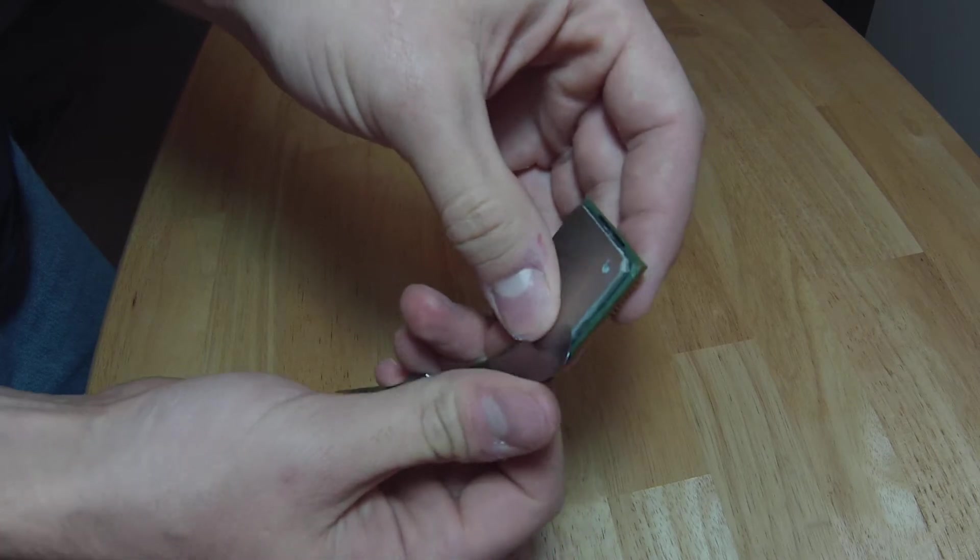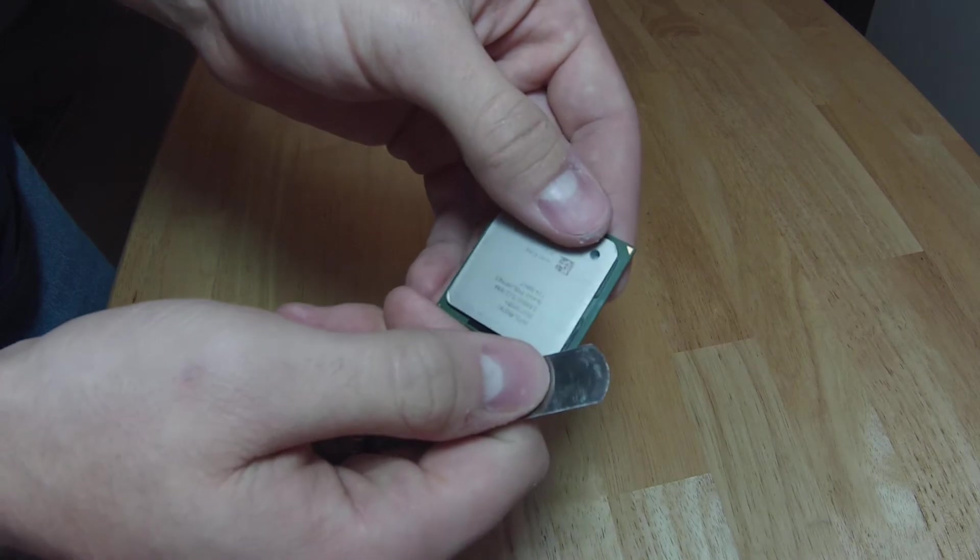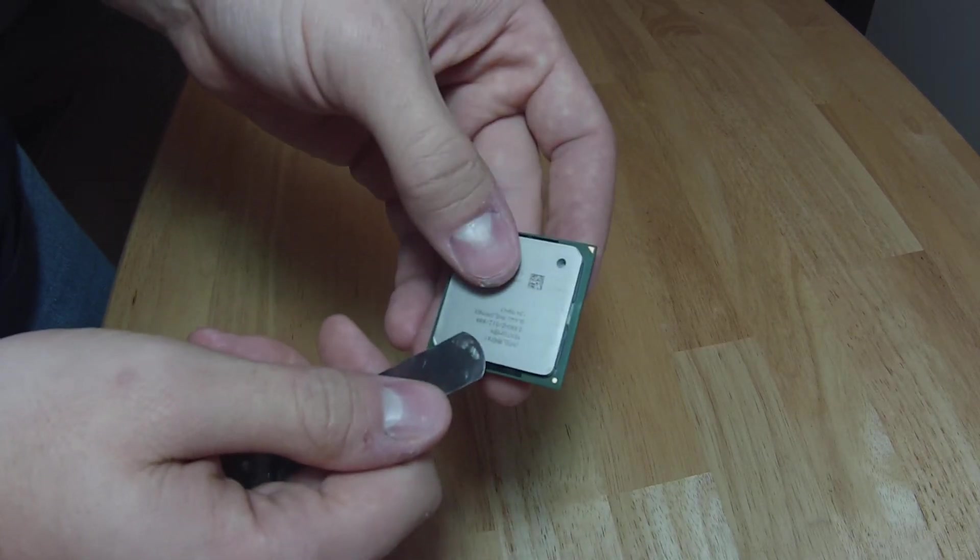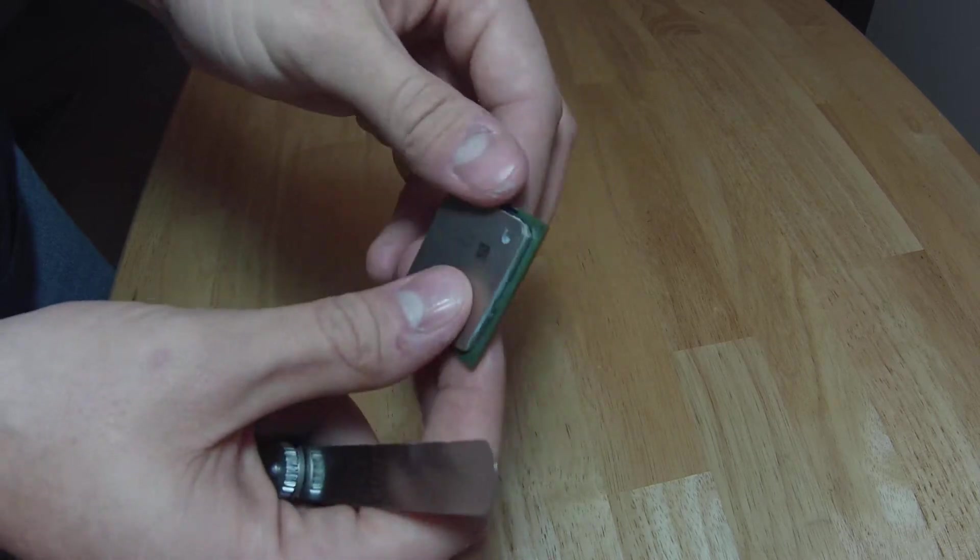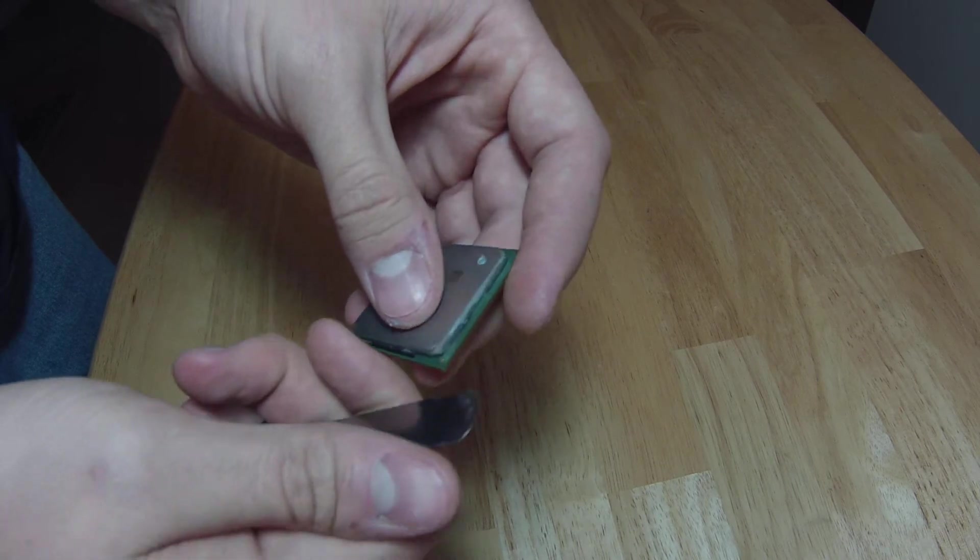About a quarter of the way, maybe to half max with the feeler gauge. You do not want to push it in far enough to break any resistors that are inside. At the same time, you don't want to push it in far enough to actually damage the CPU itself.